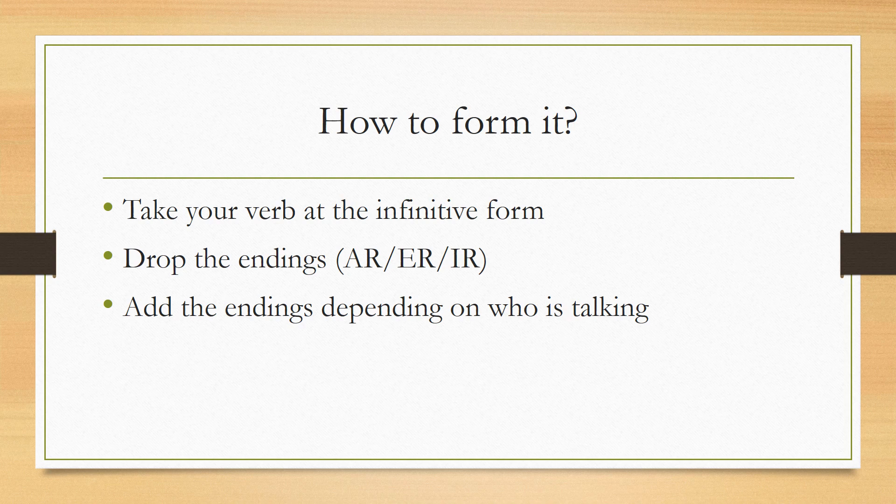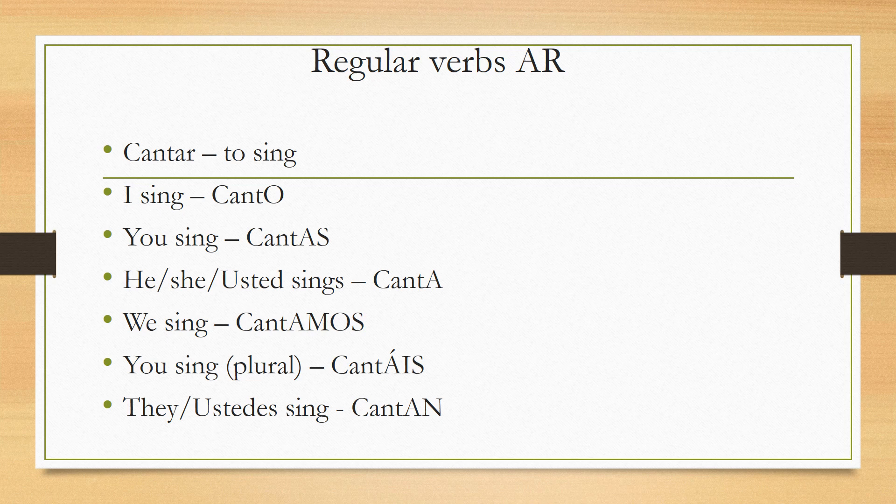First we'll look at the regular verbs, starting with the AR verbs, which are the biggest group in Spanish. Take the example of 'cantar.' For 'I,' the verb ends in O — so 'I sing' is 'canto.' For 'you' (singular), the ending is AS — so 'you sing' is 'cantas.' For 'he,' 'she,' or 'usted' (the formal way of talking to someone you don't know), the ending is A — so 'he/she sings' is 'canta.'